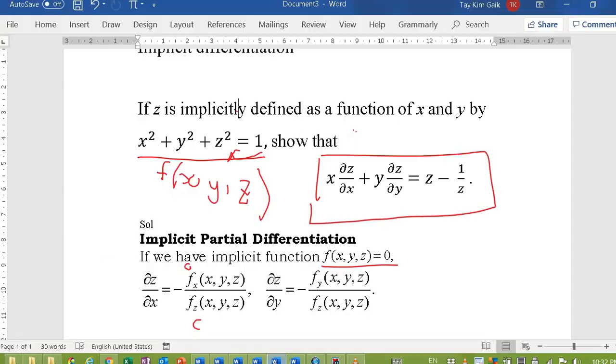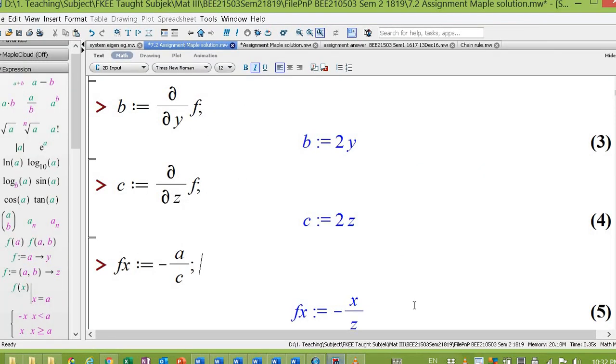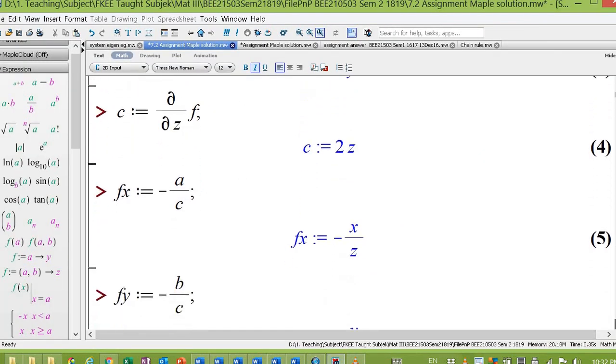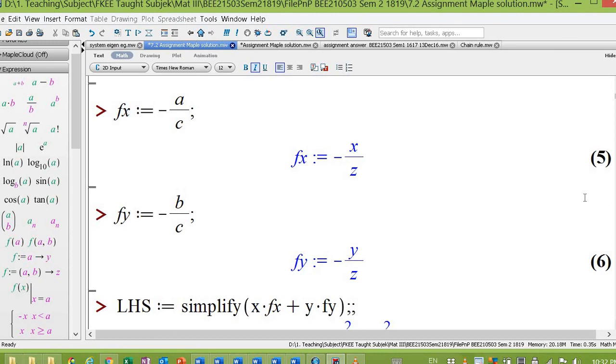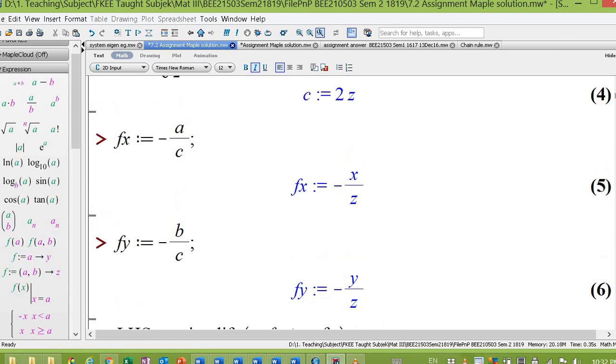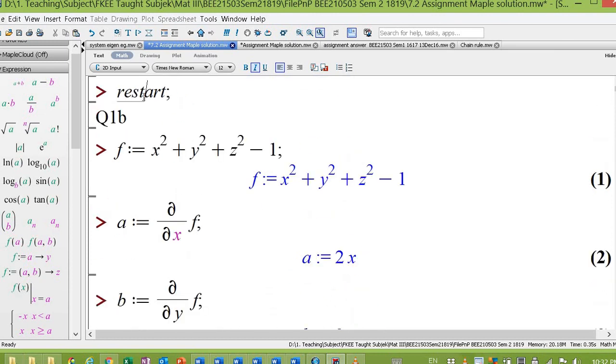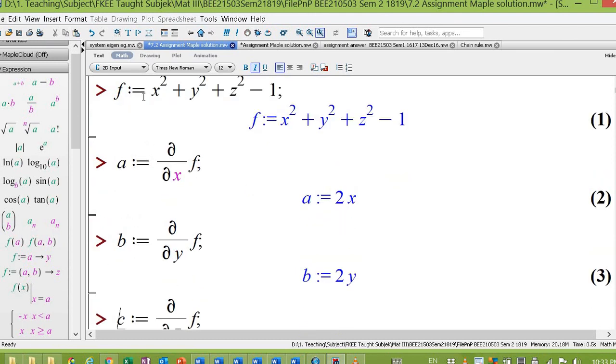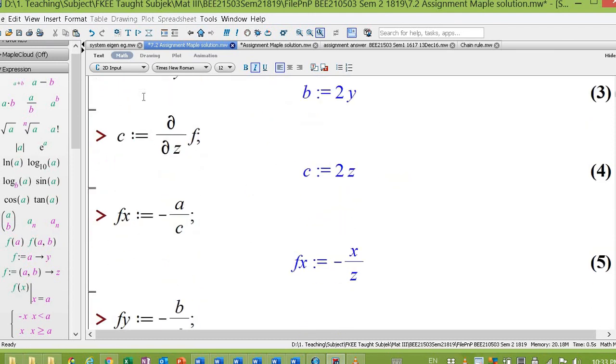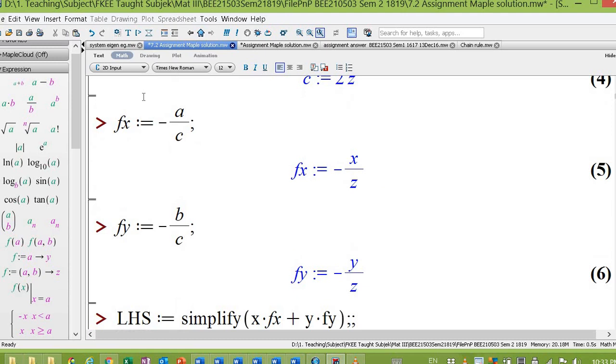And then your ∂z/∂y will be negative. This fy is actually b. So -b/c. Let me simplify it.